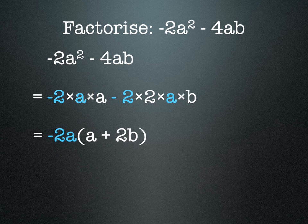From the first term there's just an a left behind, and in the second term there's positive 2b. Notice that we took out the -2, so we've left behind a positive sign. We've factorized that expression by taking out the common factor, which was -2a.